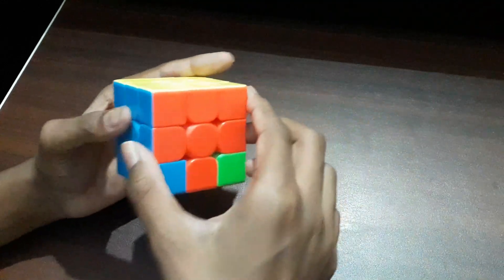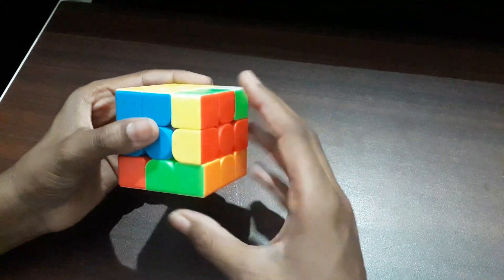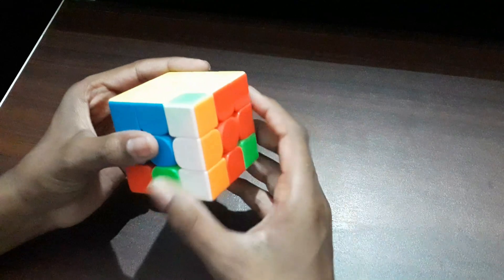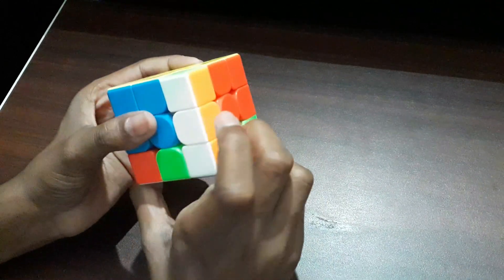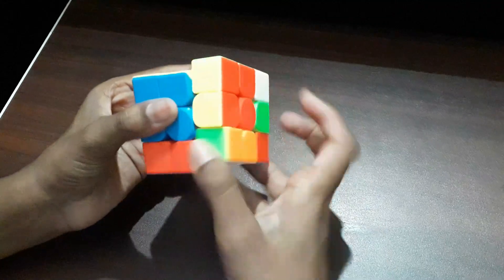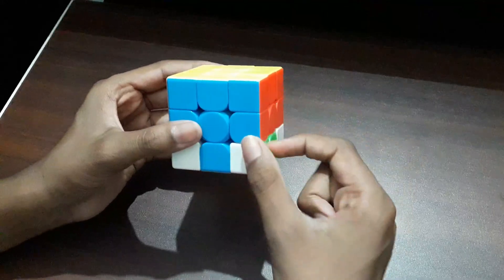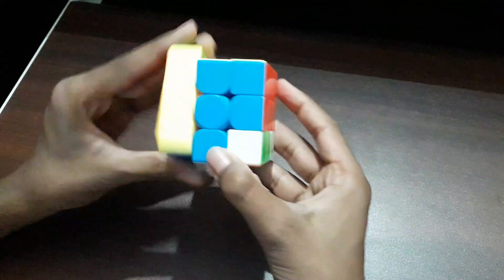We are going to turn the right side anti-clockwise, the bottom twice clockwise, then lift it anti-clockwise, then turn the bottom clockwise again, then turn this back and put it in their position. We are going to repeat the same but inverse in the other direction.